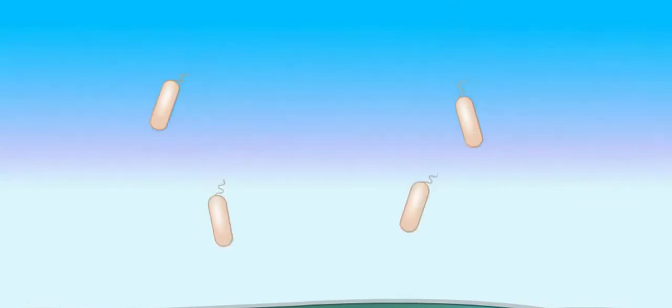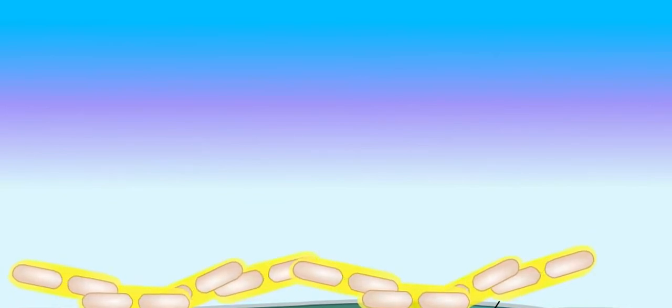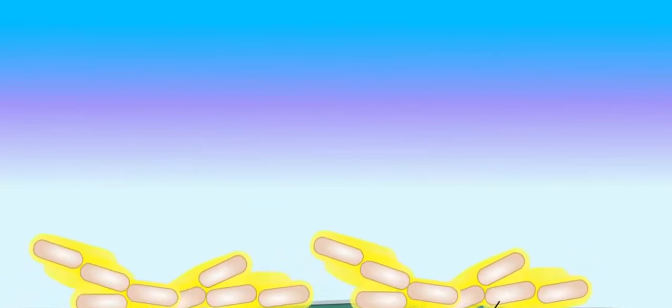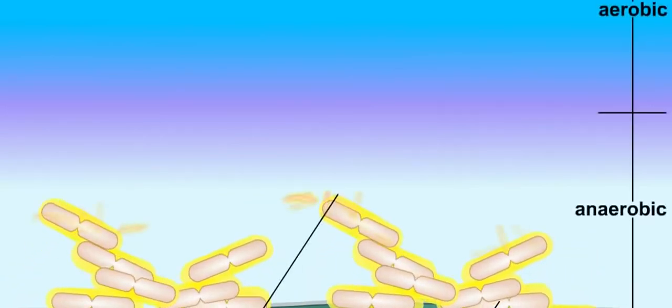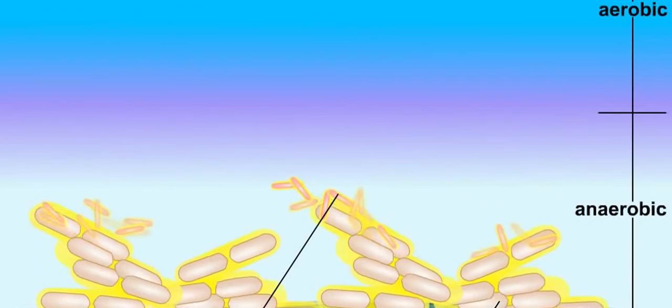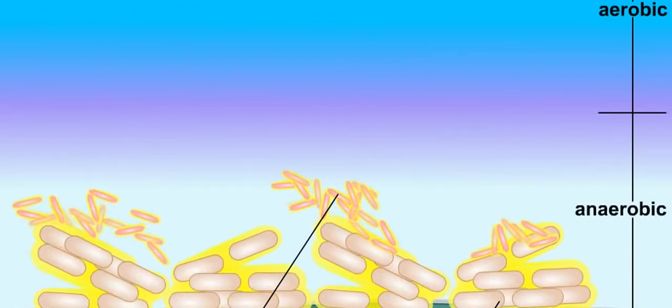In the natural environment, biofilms often consist of different types of organisms that function together in the cycling of the elements. For example, breakdown of cellulose on the surface of a decaying plant may result in release of glucose and other carbohydrates, which supports the growth of noncellulose degraders.